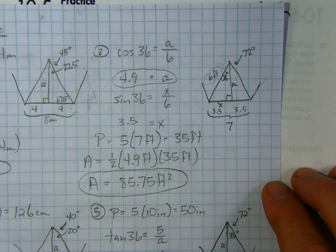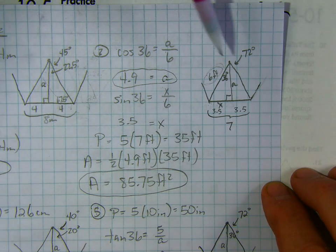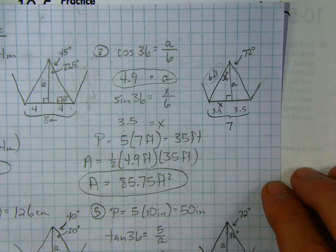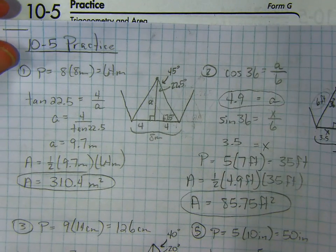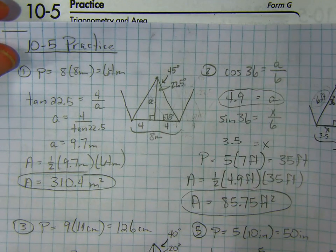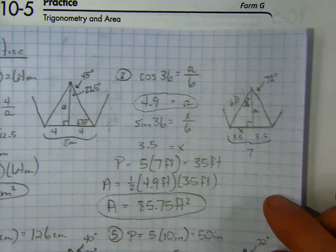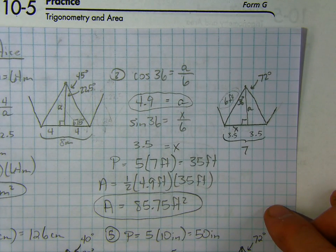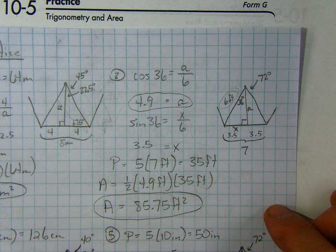You do the same thing on every problem. The things that are going to change are the measure of the angles. Sometimes you'll just get by with tangent, like over here, depending on what they give us. We just used one function to find what was missing. Sometimes you'll have to use sine and cosine to find more portions of the triangle to get the parts of the pentagon you need to solve for the answer.